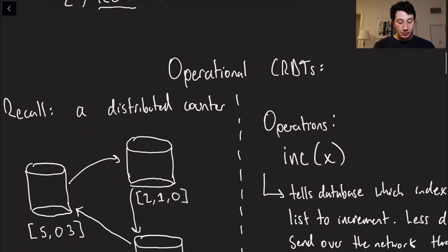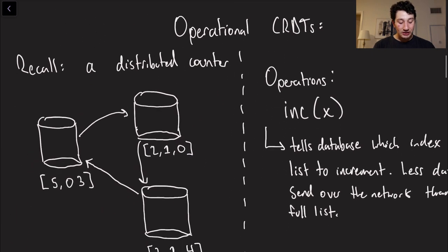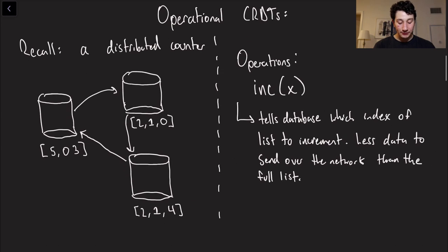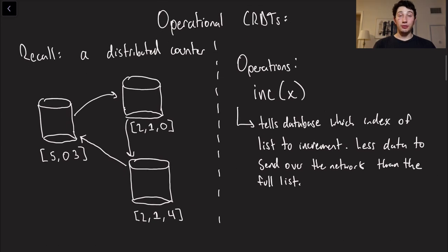So let's talk about two possible implementations of CRDTs before I talk about specific data structures that we can implement with them. So let's recall from last video the concept of a distributed counter. We're going to use the distributed counter here to demonstrate what an operational CRDT is.